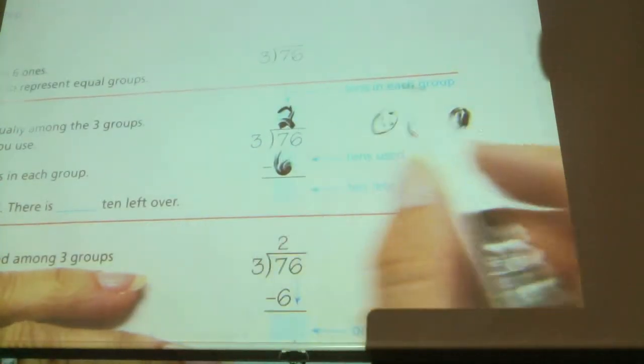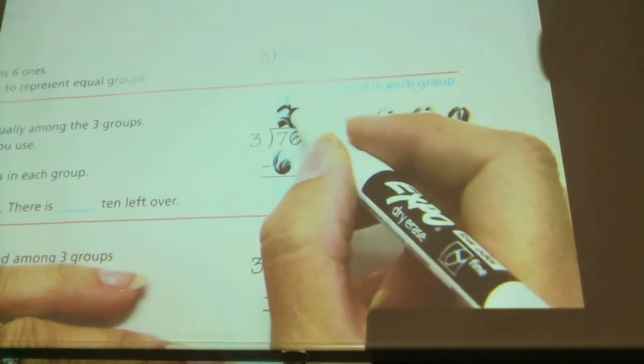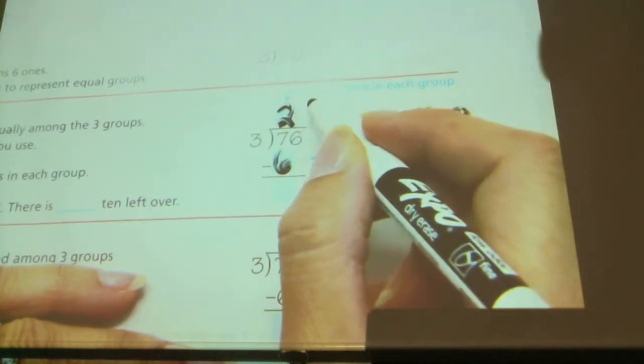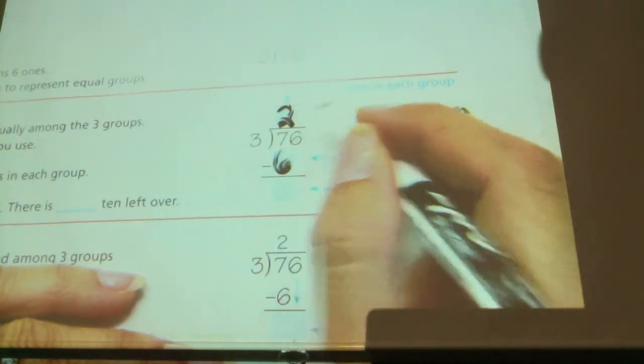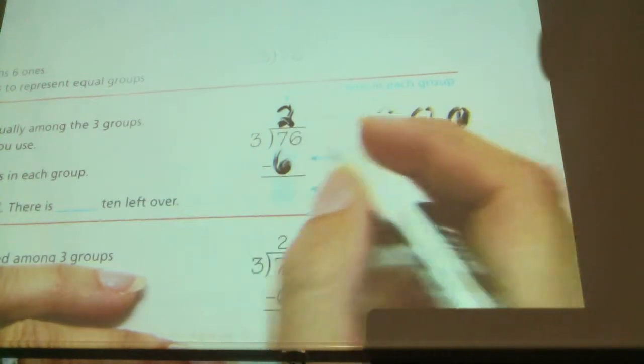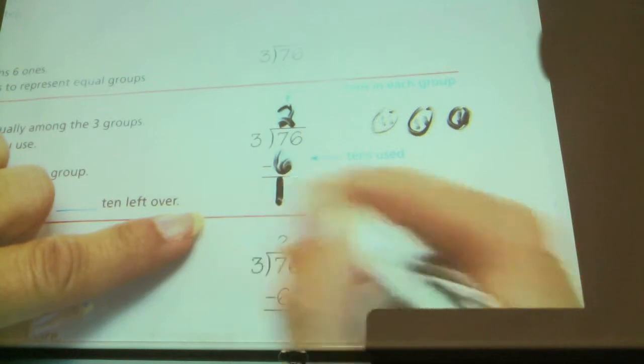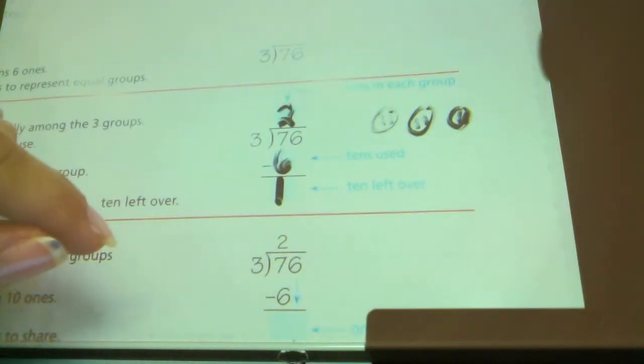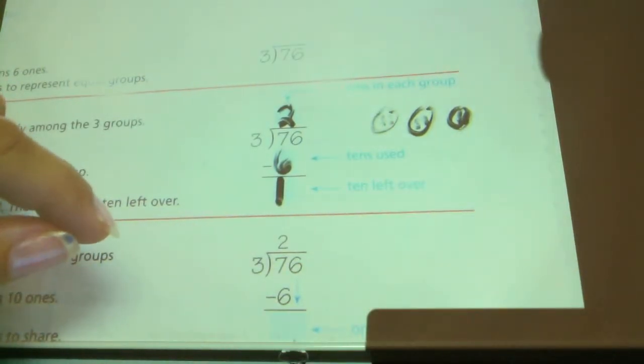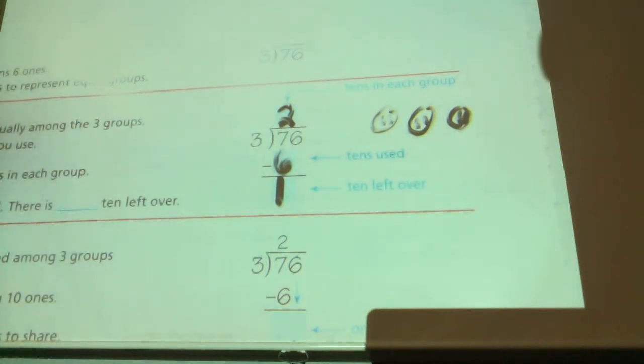Because remember, we're trying to, when we're looking at our groups, we're coming up with an answer. Our answer goes up here, correct? So now we're just going to kind of do it as we go. Now I've used all but one ten. I have one ten left. If I was doing this with my ten sticks, I could show you. Here's my one ten I have left.